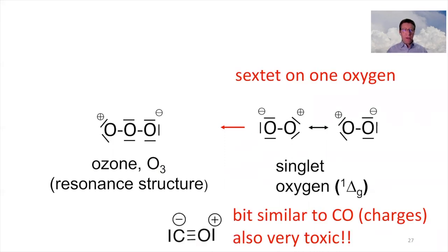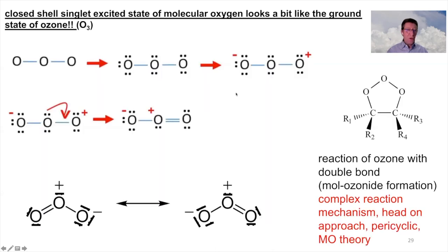We have to notice that one of the oxygen atoms has a sextet. It has only six electrons around it. So it does not have a noble gas electron configuration. It does not have an octet. It wants to react. And we see that carbon monoxide, CO, has a similar zwitterionic resonance structure. And it's also toxic.